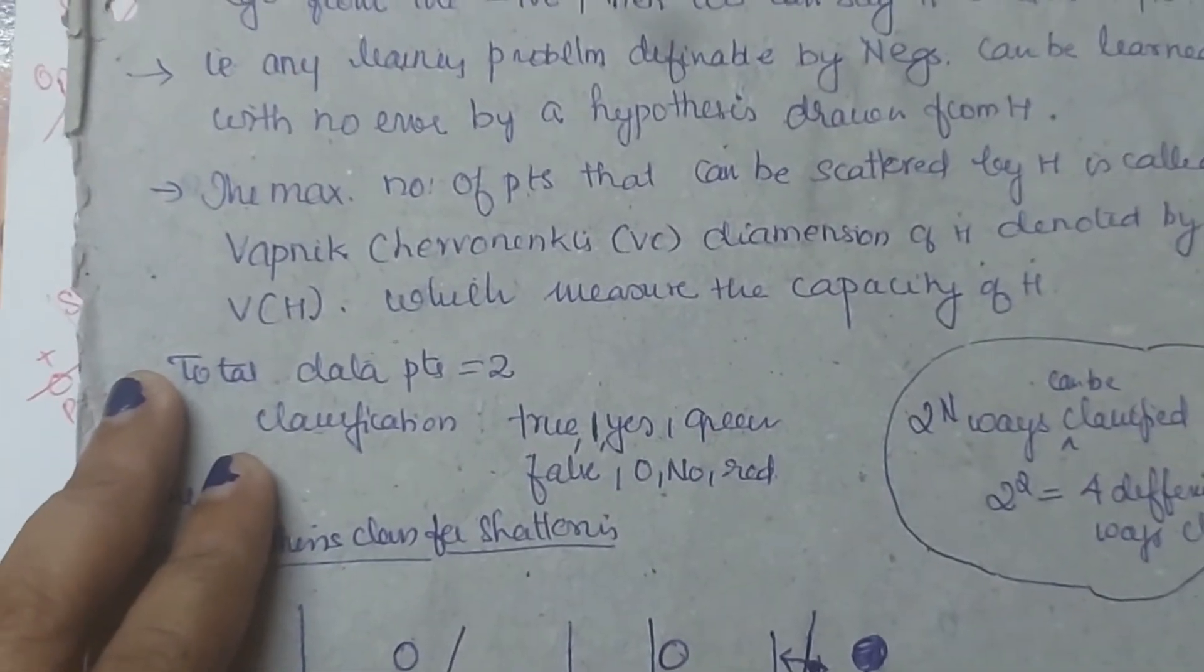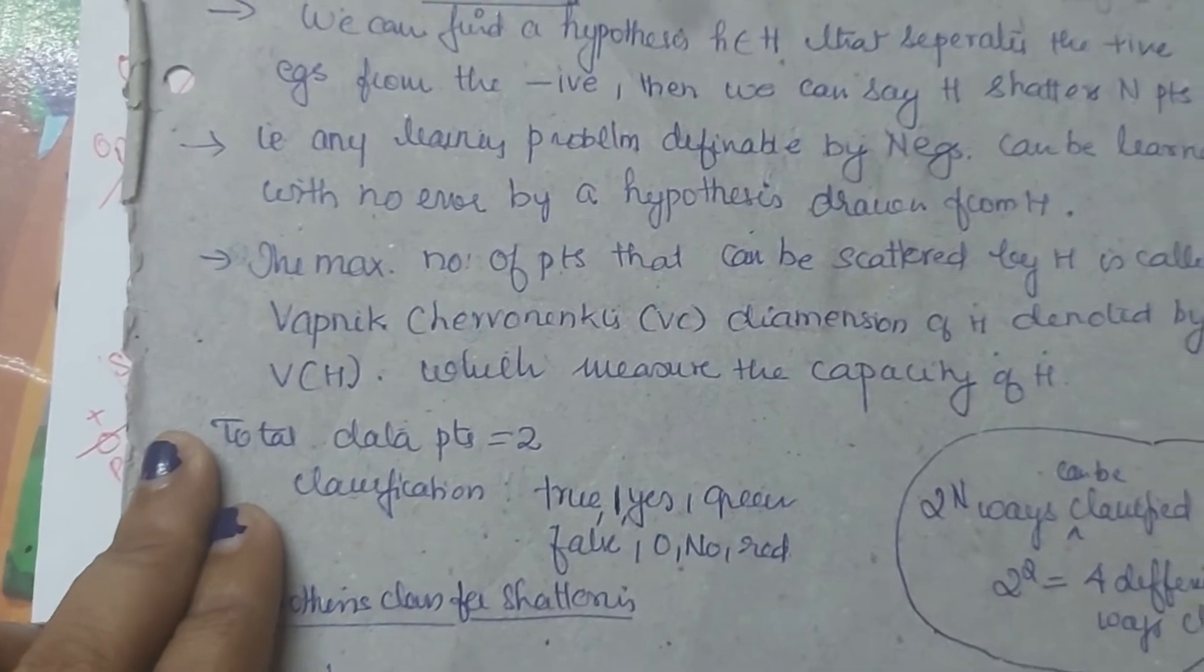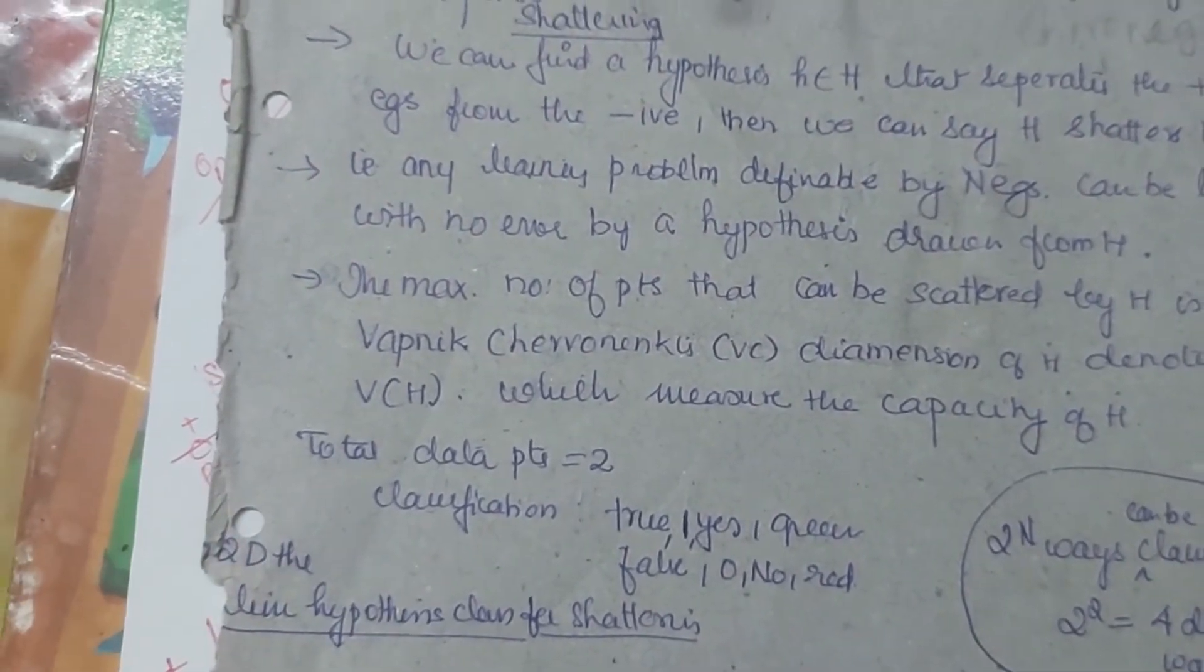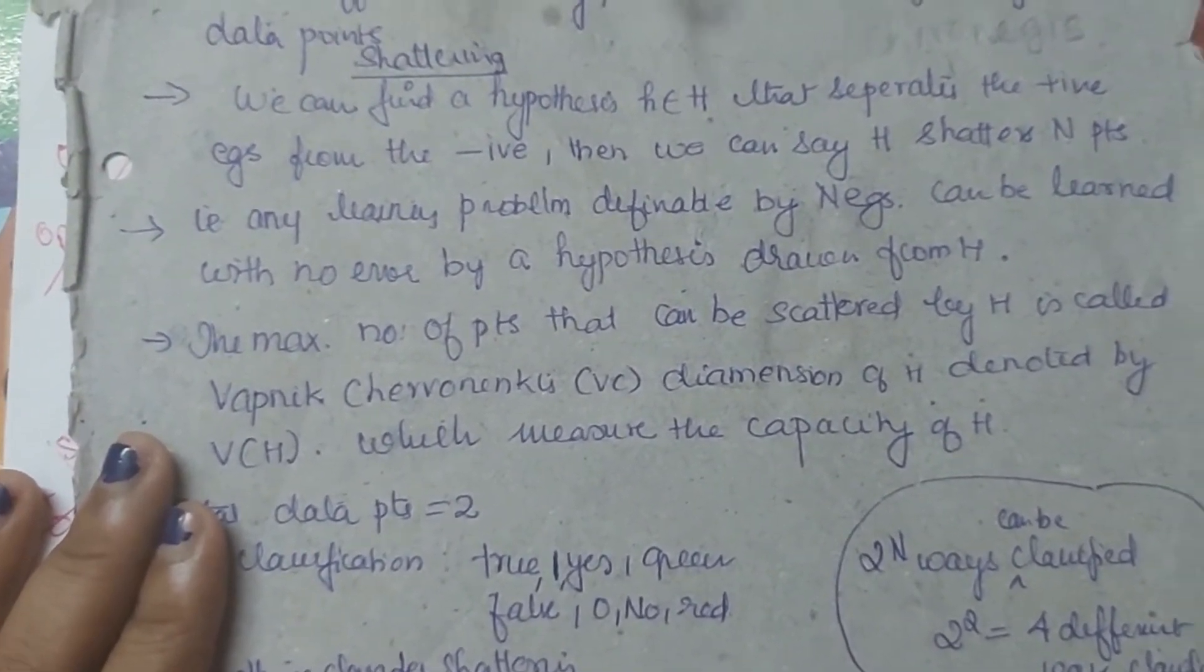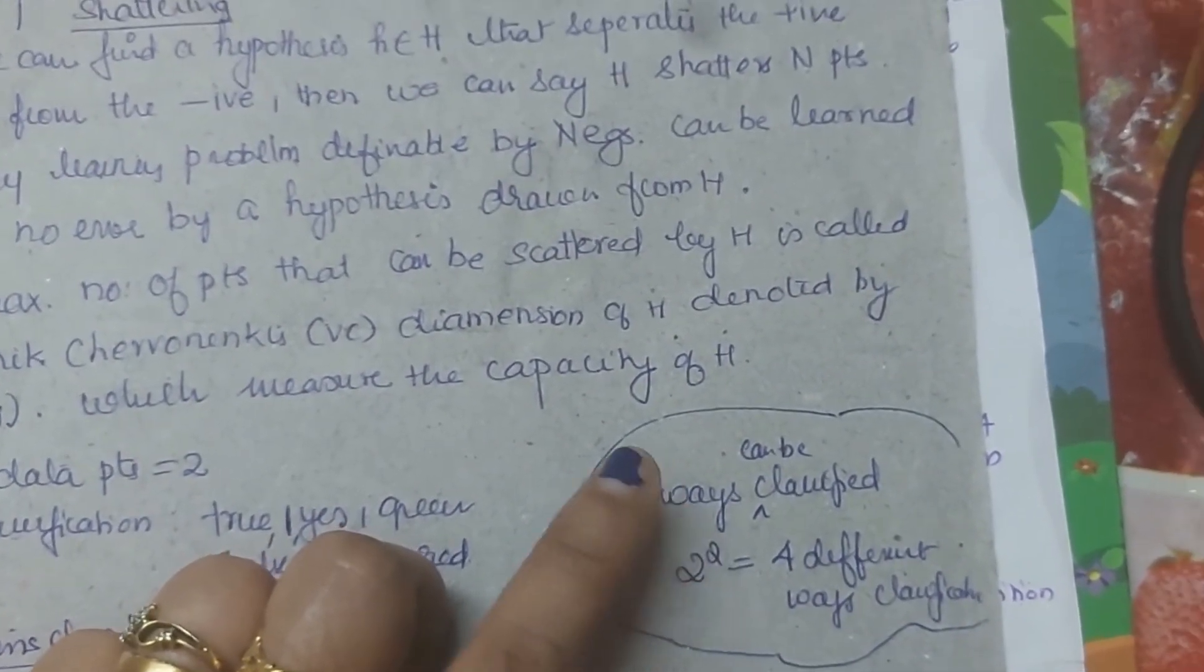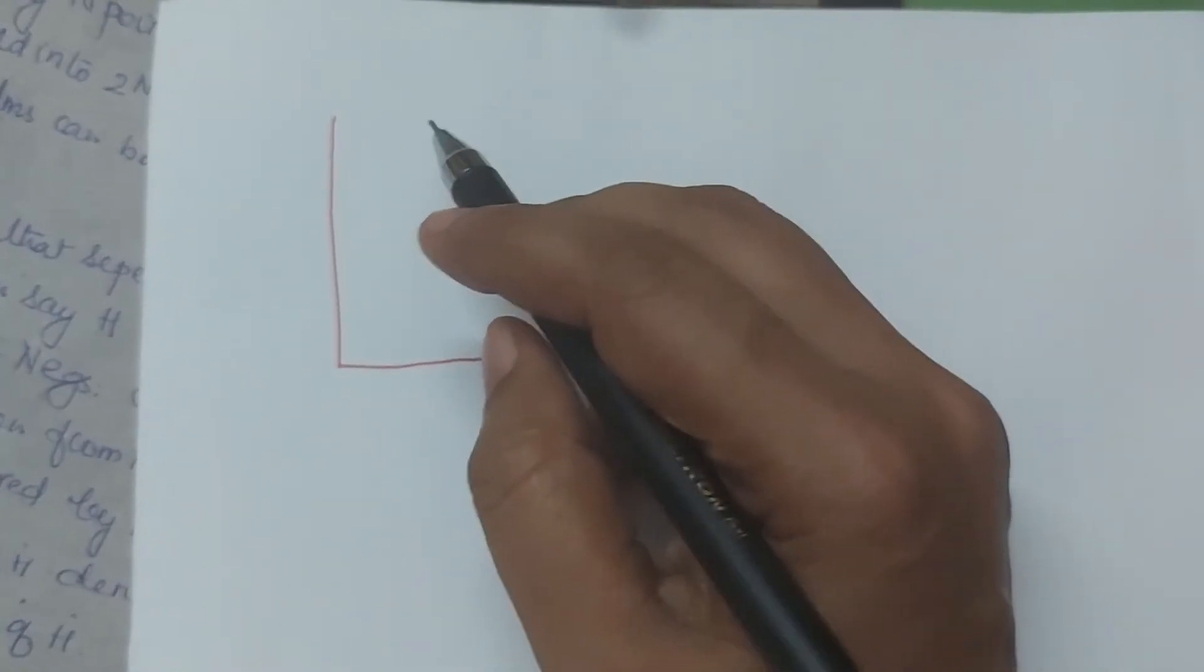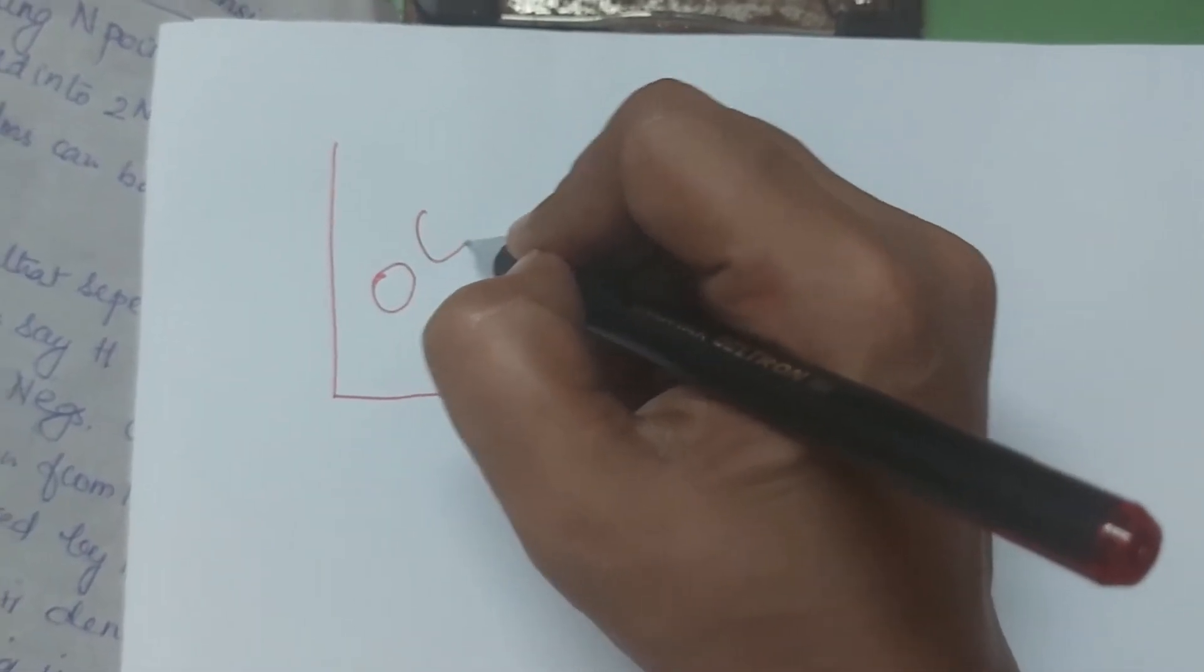If there are total two points, then you can classify those two points into yes or no, or you can classify them into true or false. You can classify them into green or red. So there are 2 raised to N ways in which you can classify N data points. Suppose you are given 2 values in D, what is positive and negative?